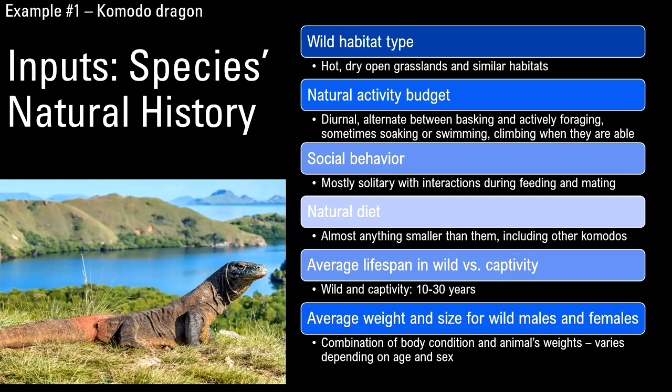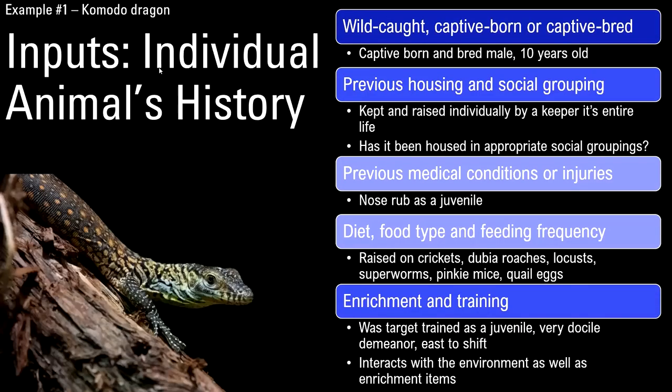There's not a lot of wild information on some species, so you use information from more closely related species that have wild observations. We've talked a lot about using species natural history for housing and diet. The more specific information you get into for the animal you're assessing is its individual history.